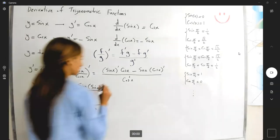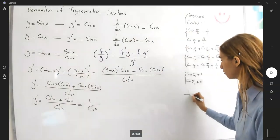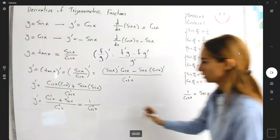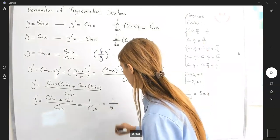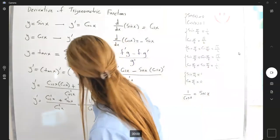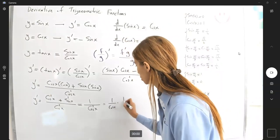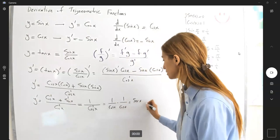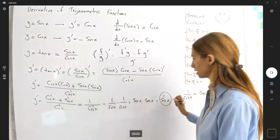But remember that 1 divided by cosine x was defined as secant x. So this equals 1 over cosine x times 1 over cosine x, or secant x times secant x, or secant squared of x.